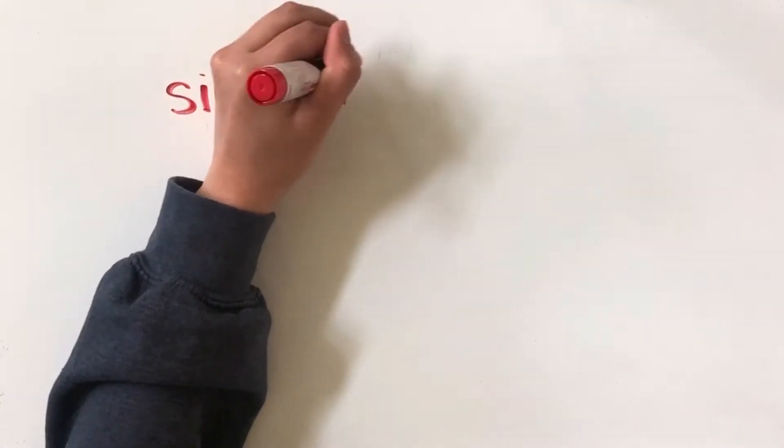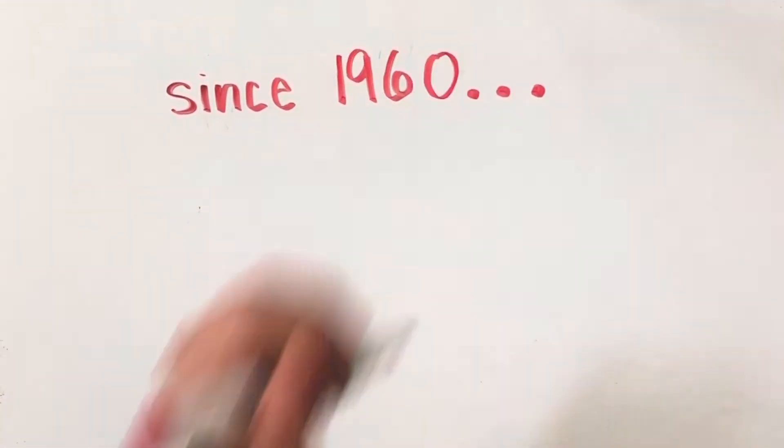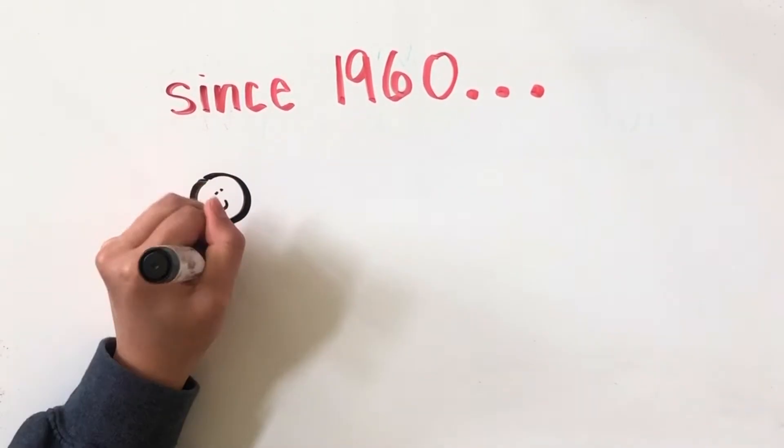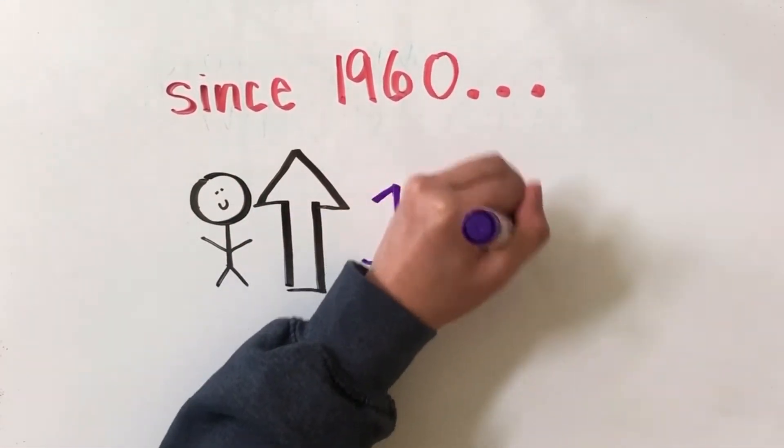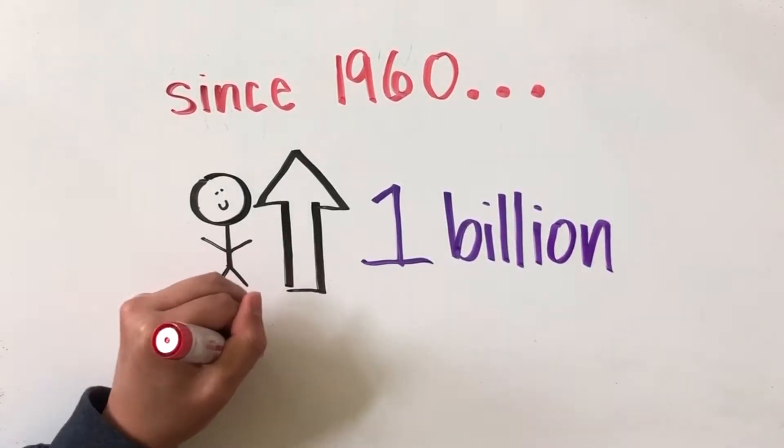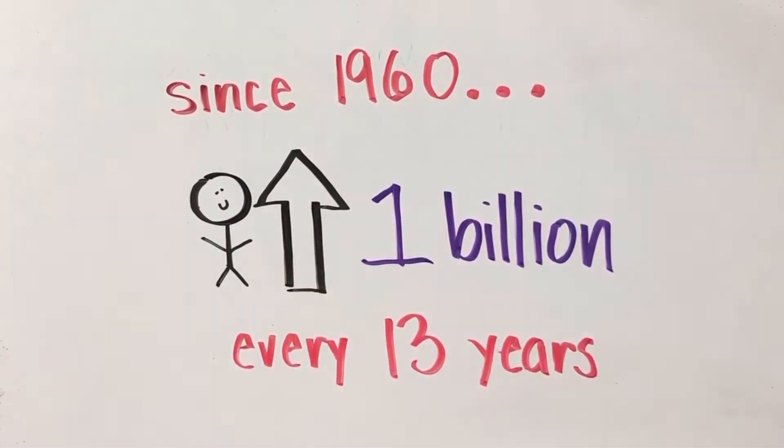One reason we need to do this is because the human population has seen a massive increase. Since 1960, the world population has grown by roughly 1 billion people every 13 years. This leads to pressure and unsustainable practices of using our resources.